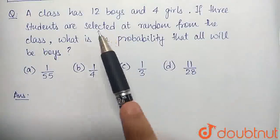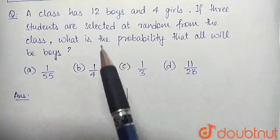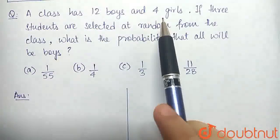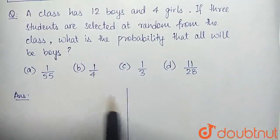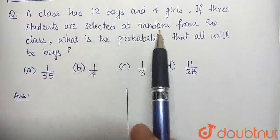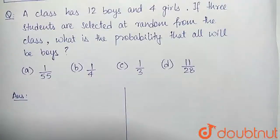if the first one we select is a boy, the number of boys from which we have to select now gets reduced to 11, whereas the number of girls stays the same. So the new probability for the second selection would now be from 11 boys and 4 girls instead of the previous total of 12 and 4.